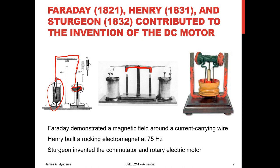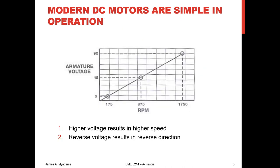Modern DC motors are a little different in construction, but still very simple in operation. If you put in a higher voltage, you generate a higher speed. If you reverse the direction of the voltage — just flip the contacts — it turns the other direction. That operation maintains today. DC motors give us speed control. If you want position control, you might use a stepper motor or wrap feedback around your DC motor to make it a servo motor. Higher voltage means higher speed; reverse voltage means reverse direction.